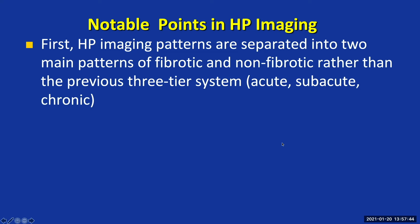One of the first takeaways in the HP diagnostic guidelines is that we are moving away from trying to subcategorize hypersensitivity pneumonitis based on temporality. Previously, most people would subcategorize HP into the acute, subacute, or chronic bin — and that has been problematic for many reasons. Now we're espousing that you subcategorize HP into a more logical fibrotic versus non-fibrotic pattern. In non-fibrotic cases it's easier in many instances to make a diagnosis, because as fibrosis progresses the different subtypes start to look similar.